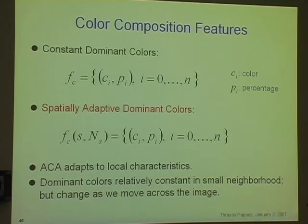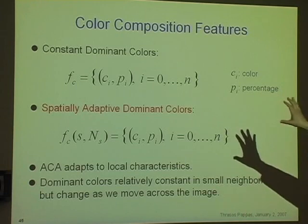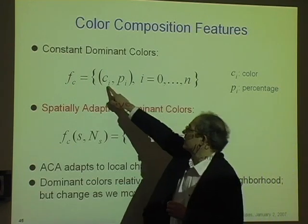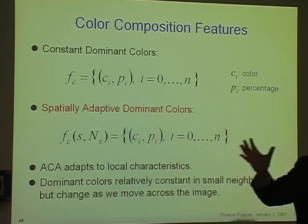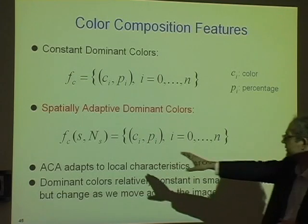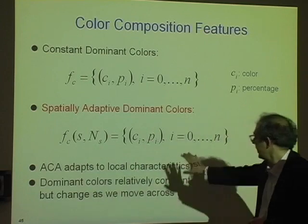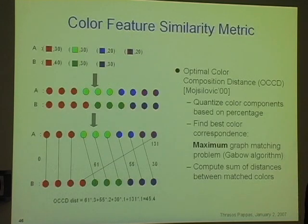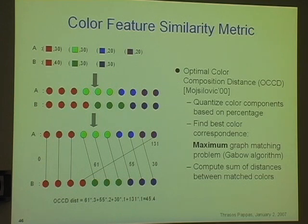Our feature then becomes — people have worked with dominant colors, Manjuna's group in particular and others. Rather than have a global characterization, we have a localized characterization. Our characterization is in a localized neighborhood at pixel s — we have a percentage and a color. In a small window, the colors are roughly constant, but as you move around they must change. What you also need if you are going to decide on texture similarity is a color similarity metric, and that's not a trivial issue. Moisilovic and others, including Manjuna's group, spent a lot of time on that. If you have two color histograms, how do you compare them? The solution that Moisilovic proposed: quantize the color space, find the fine matches between the quanta. You do the obvious matches first, and then what's left over has to match with the remaining colors. That's the optimal color composition distance, and we use that.